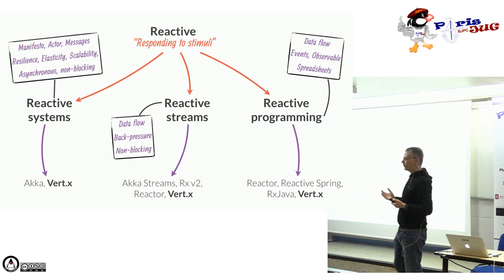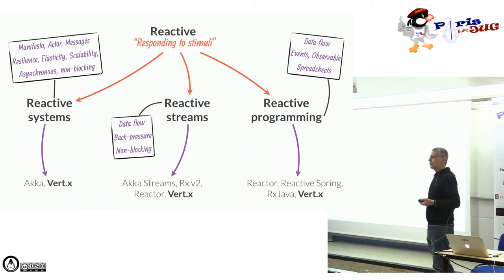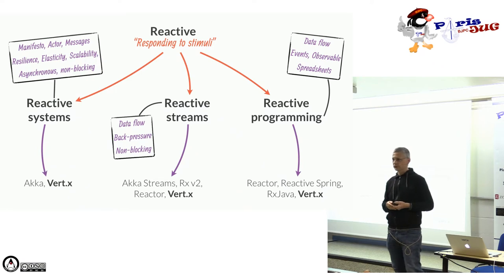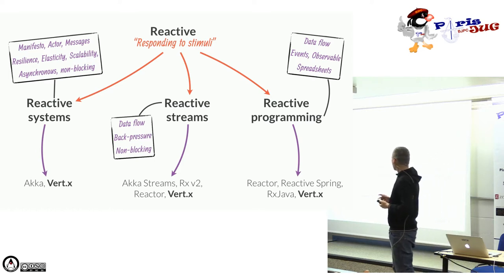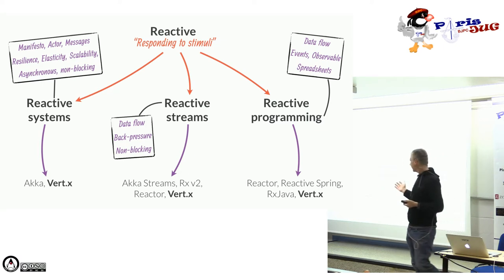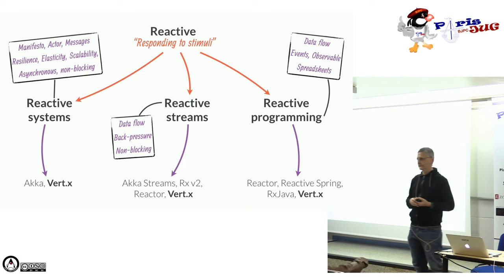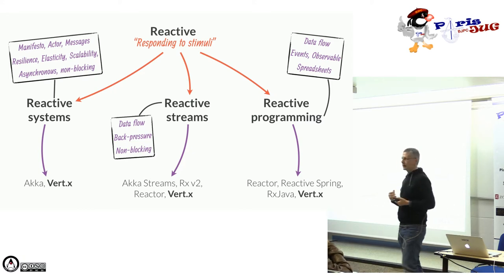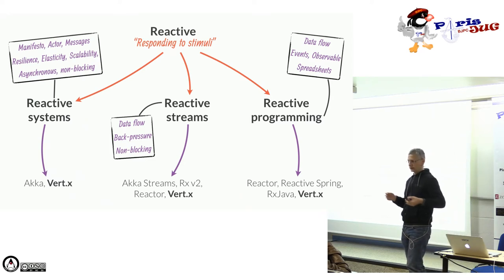On a ce slide qui essaie d'expliquer ce qu'est le réactif. Le mot réactif est surchargé. On peut catégoriser ça en trois grandes parties liées. Il y a la partie « réactif système », où on considère les choses en tant que système distribué. Il existe un manifeste qui définit les propriétés d'un système réactif distribué.